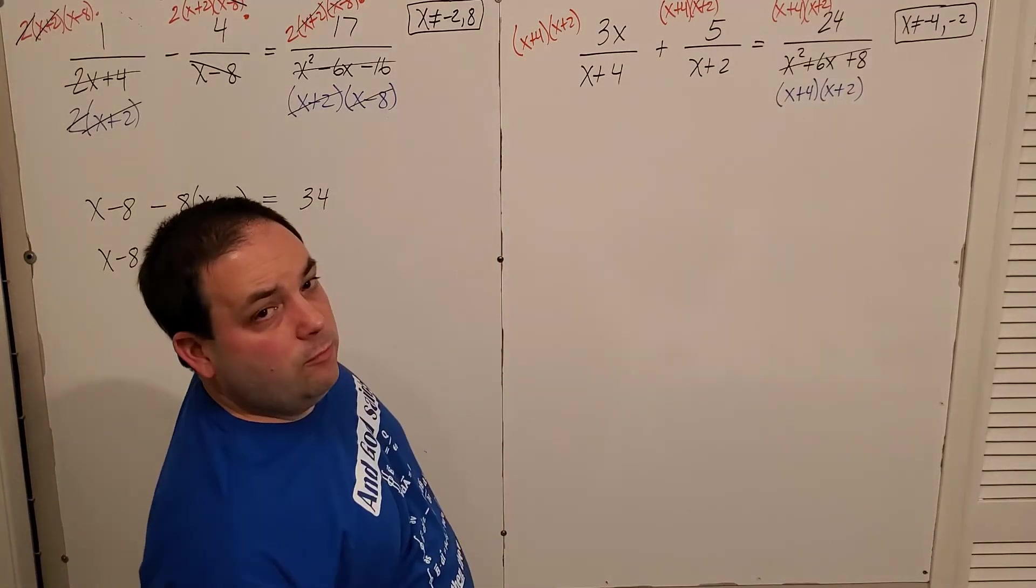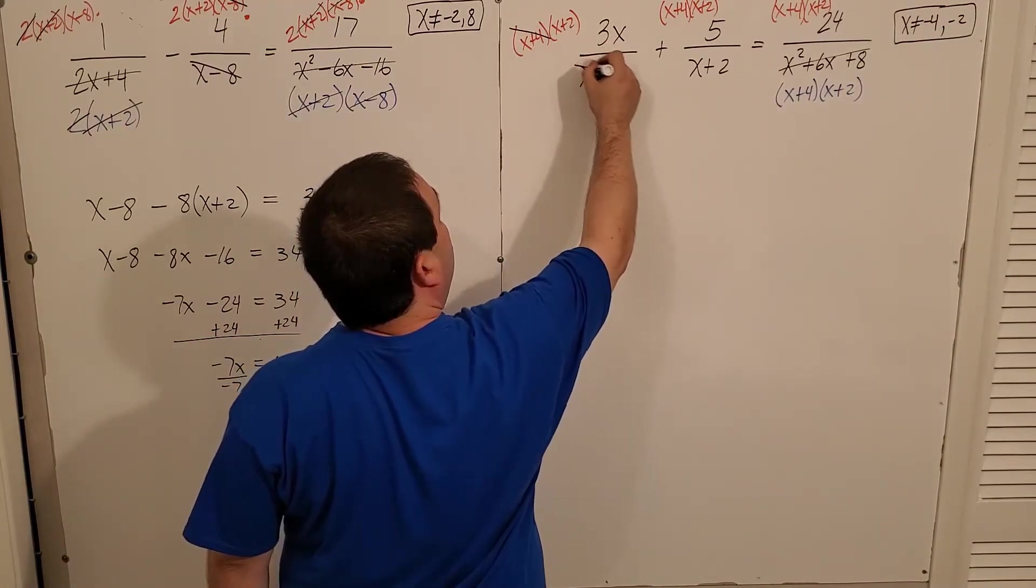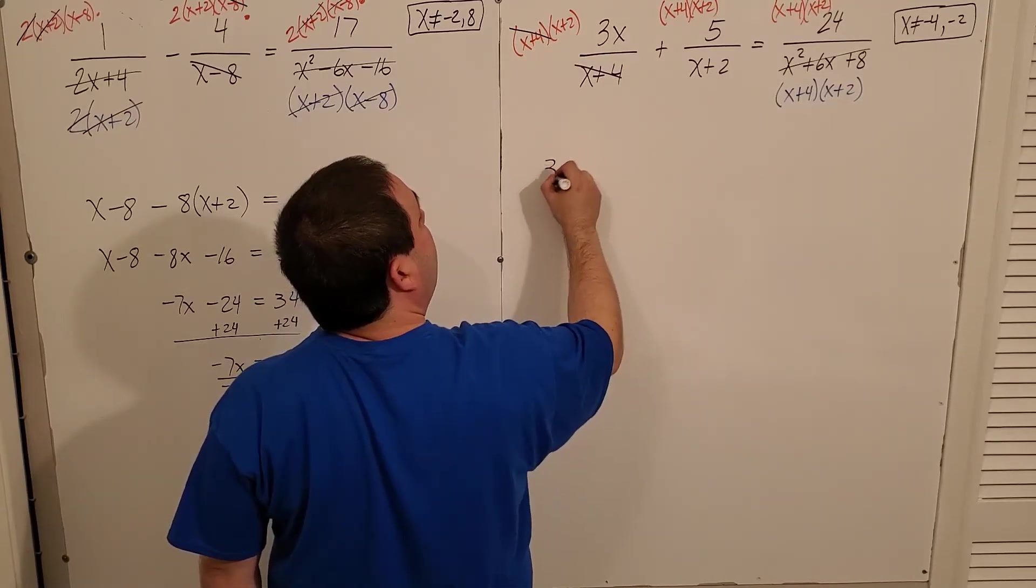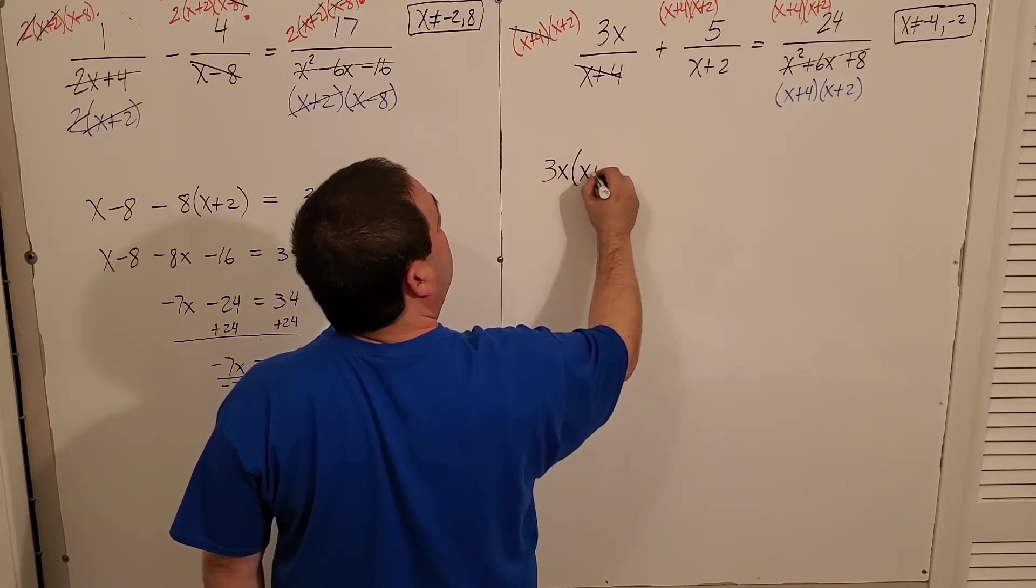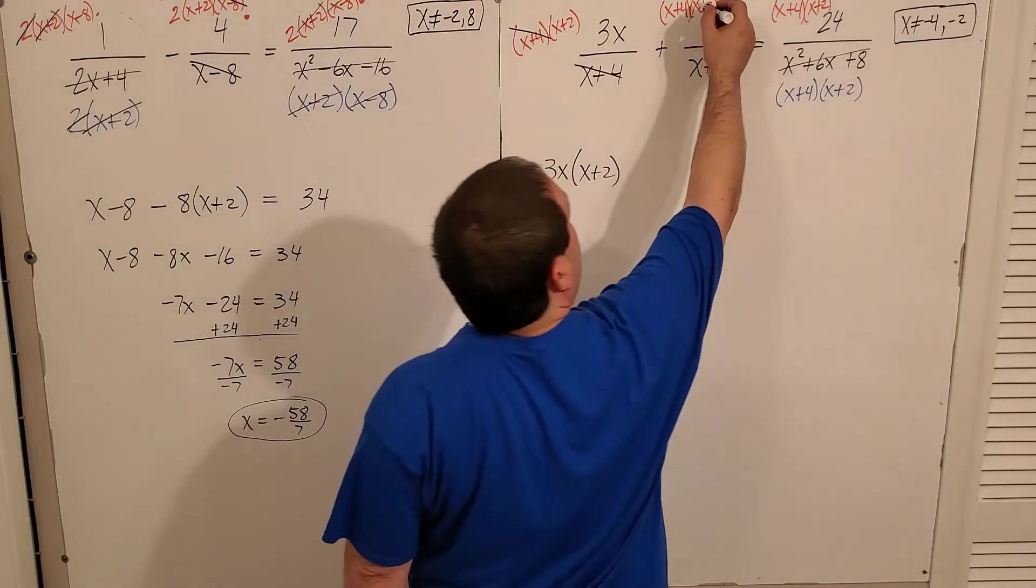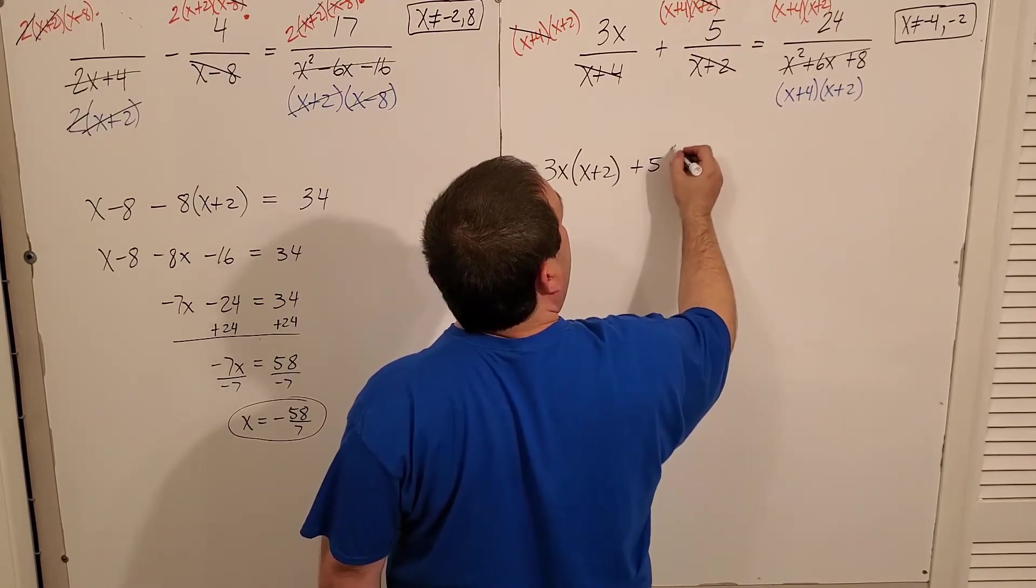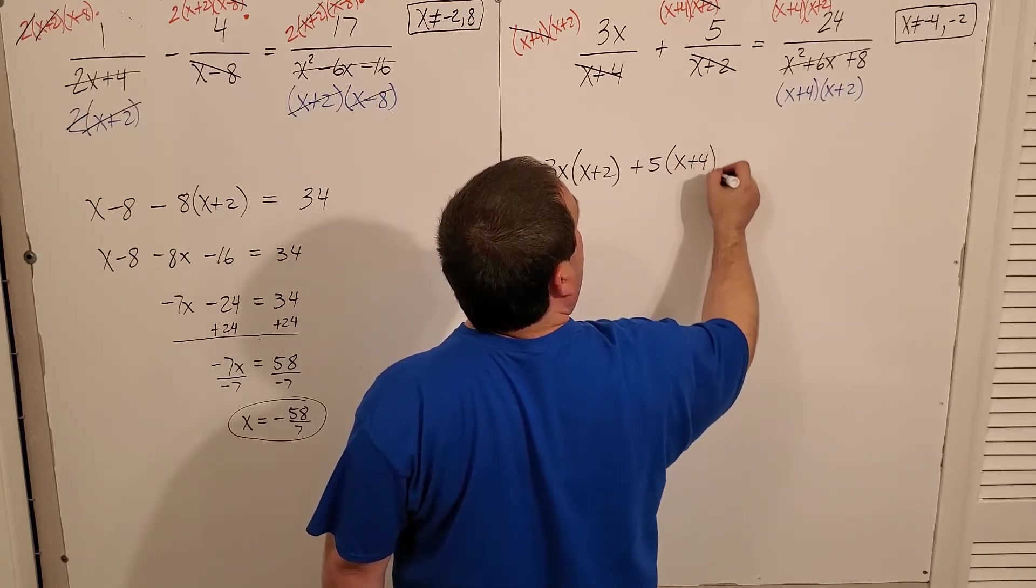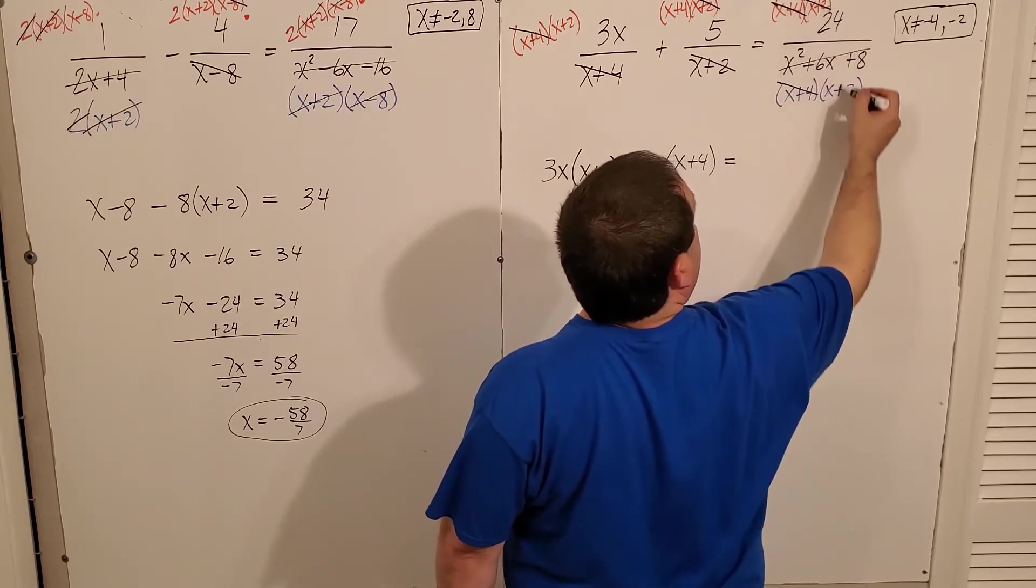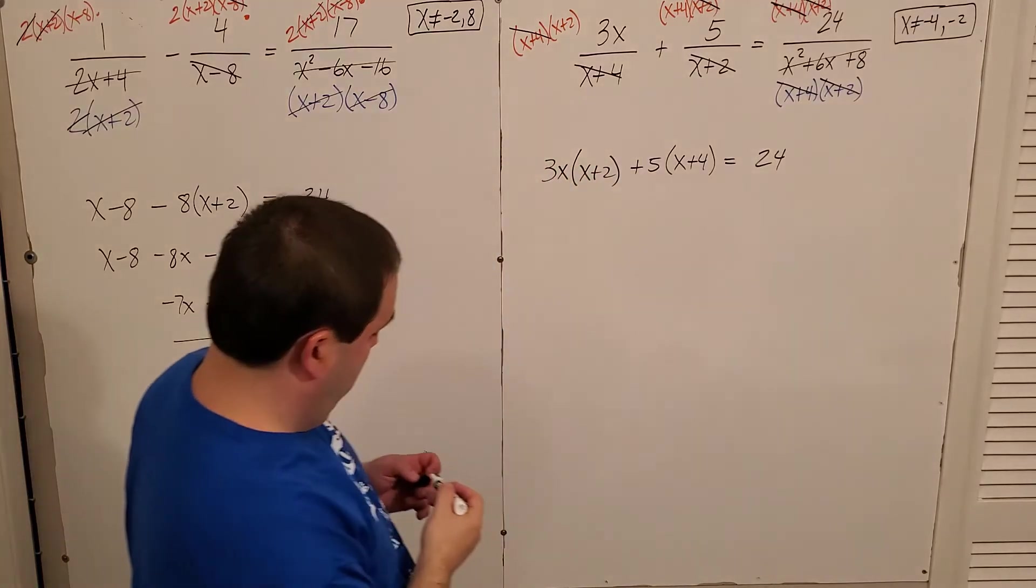Now we reduce. x plus four over x plus four is one. So I'm left with three x times x plus two. I'm just going to write that out. I'm not going to simplify any bit of it yet. Next, the x plus twos are going to wipe out, leaving me five plus five times x plus four. And then here, x plus fours are going to go and x plus twos are going to go, leaving me just the 24.